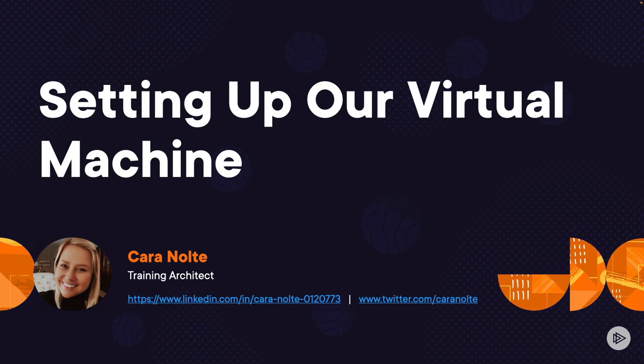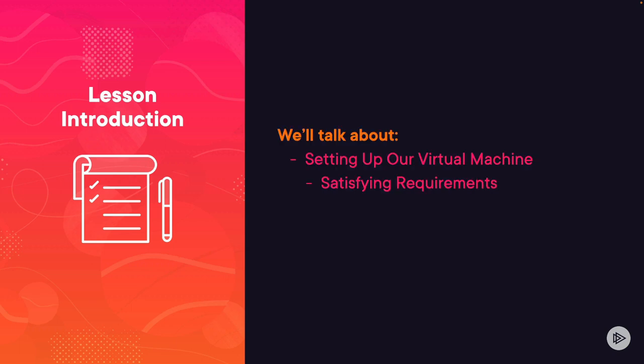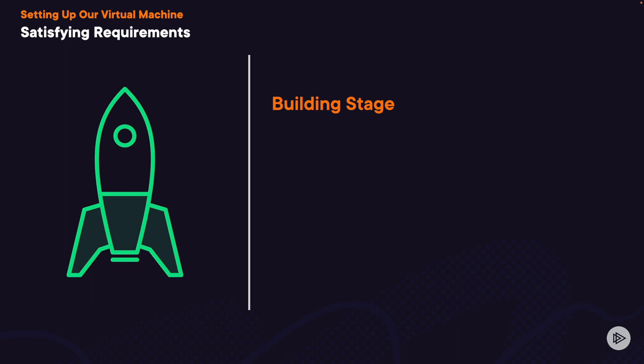Hello, and welcome back. In this lesson, we'll talk about preparing our VM, satisfying our requirements, and building our platform to build a kernel on. In the last lesson, we talked about the platforms you can use to build a Linux kernel: a standalone Linux server, a VirtualBox or other virtual installation, or one of our Cloud Playground servers.